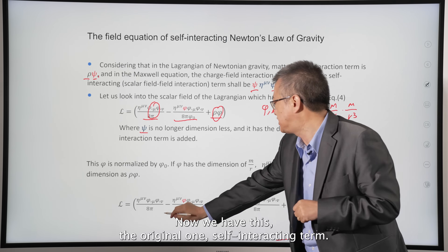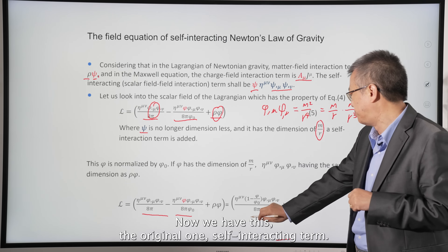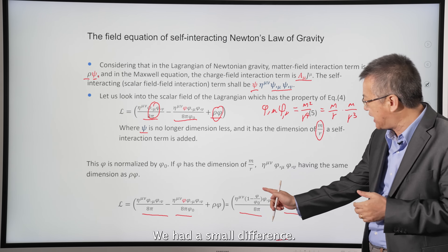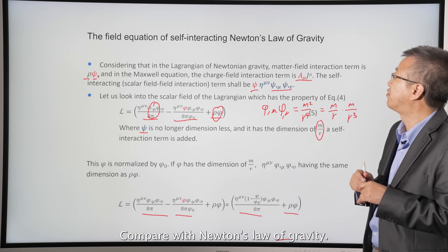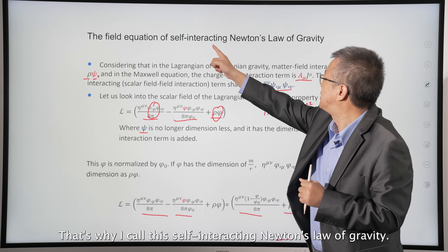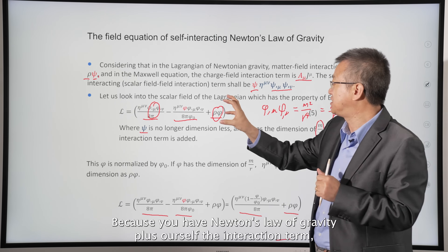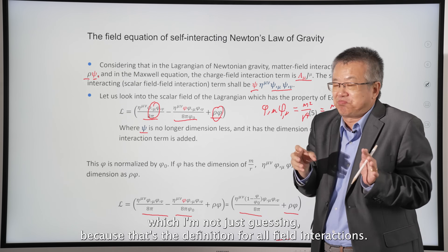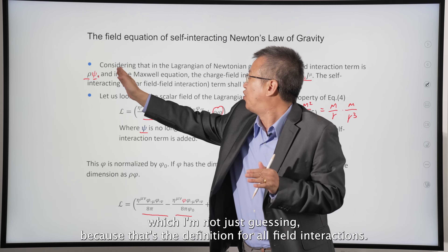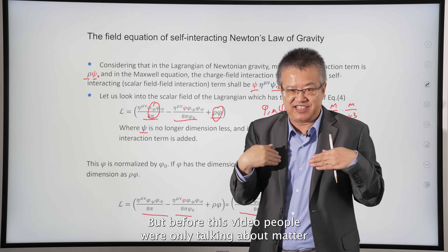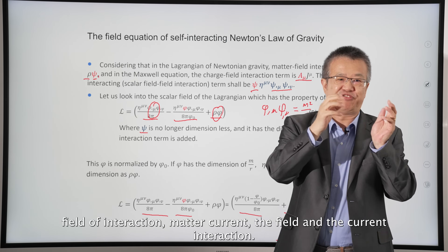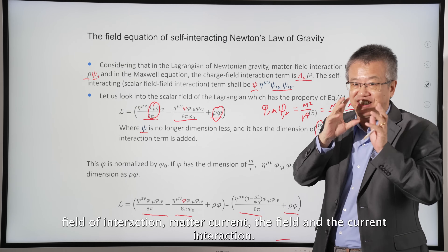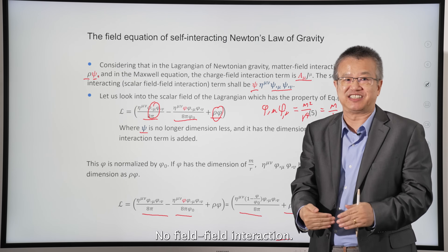With the self-interaction term rewritten, we have our Lagrangian — a small modification compared to Newton's law of gravity. That's why I call this self-interacting Newton's law of gravity: Newton's law of gravity plus a self-interaction term. This isn't just guessing — it follows the definition of field interactions. But before this work, people only talked about matter-field interaction and field-current interaction. This is the first time I'm proposing field-field energy-momentum interaction.